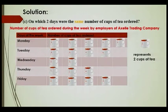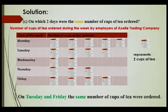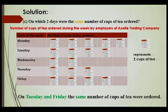Part C: On which two days were the same number of cups of tea ordered? Looking at the pictogram, you can see that on Tuesday and Friday we have the same number of cups of tea. So on Tuesday and Friday, the same number of cups of tea were ordered.